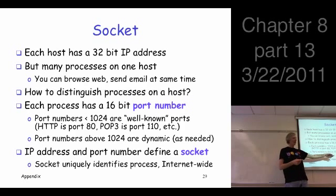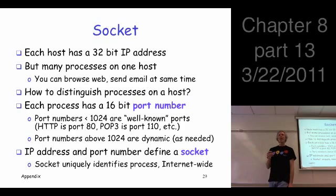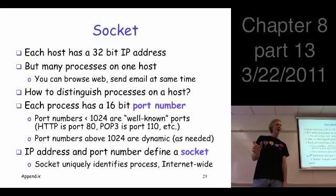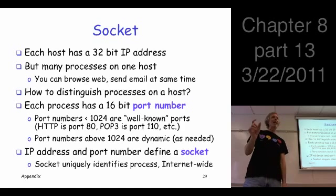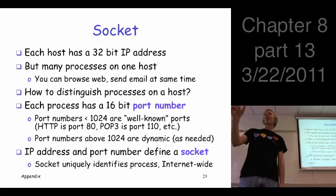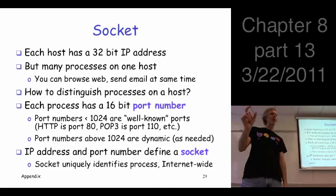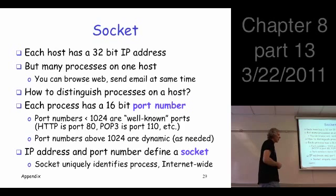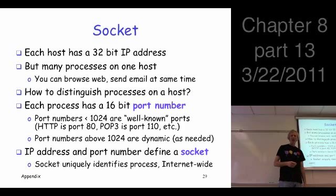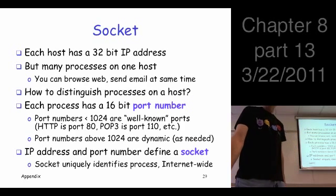The port numbers above 1,025 are just assigned dynamically as needed, as you create various applications. So the IP address and the port number together define a socket, and the socket uniquely identifies the application on the network. The address tells it where, and the port number tells it which particular application. So you're unique on the network, internet-wide.